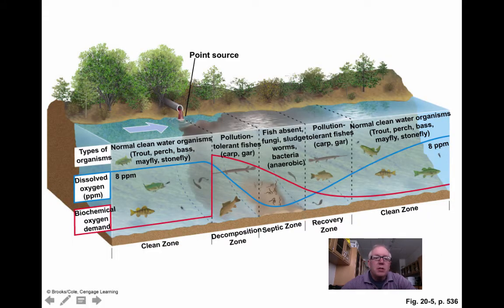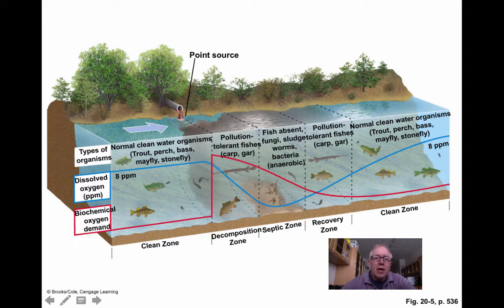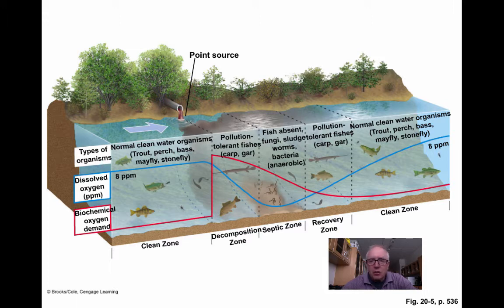This leads to the oxygen sag curve. Downstream from the point source pipe, dissolved oxygen drops sharply as BOD rises. Different species can survive in these varying conditions. Further downstream, as dilution occurs, oxygen levels recover and BOD decreases, returning to pre-pollution conditions.